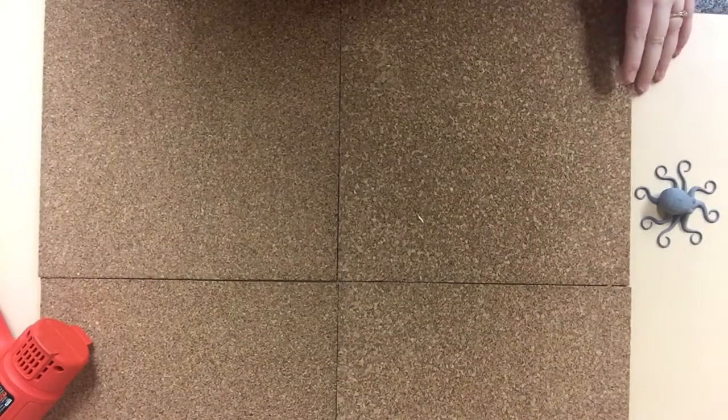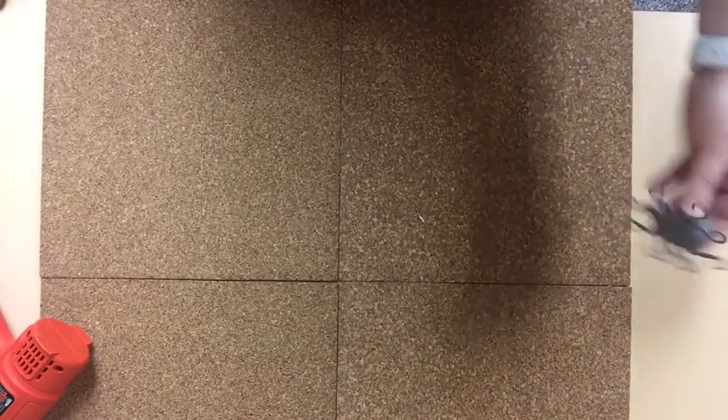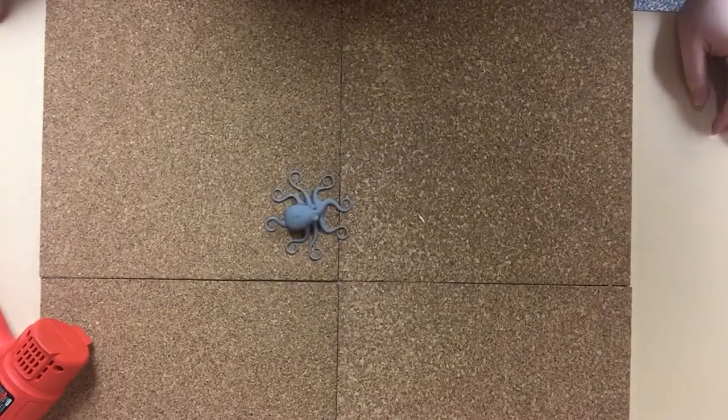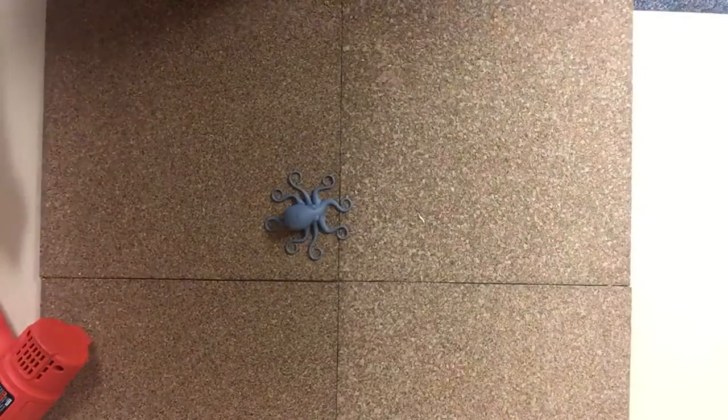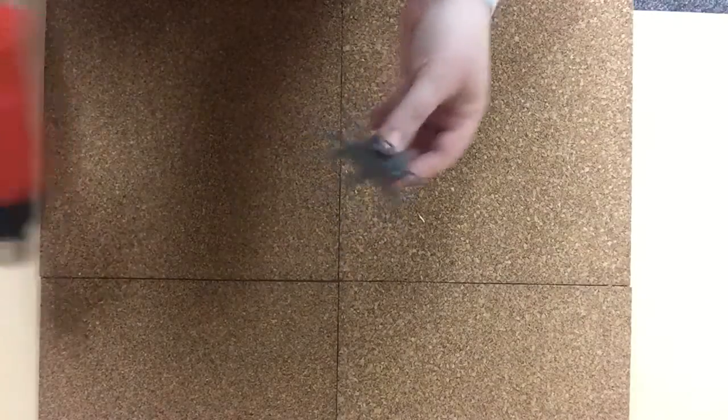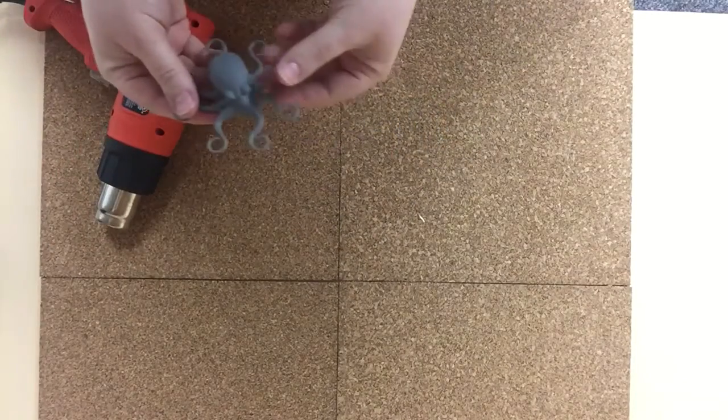So now I'm going to show you how to use the heat gun to change the shape of your 3D printed object. So what we want to do here is we want to curve the octopus's legs just slightly around.